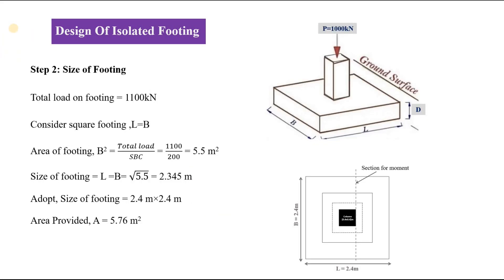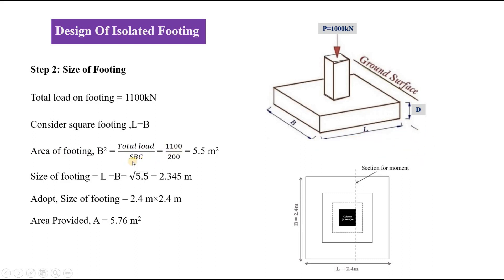The next step is to find the size of the footing. For a square footing, the area of footing equals total load divided by SBC of soil. Total load is 1100 kN and SBC is 200 kN/m², giving an area of 5.5 m². Since it is a square footing, the side length is the square root of 5.5, which equals 2.345 m. Hence the size of footing is taken as 2.4 m by 2.4 m.